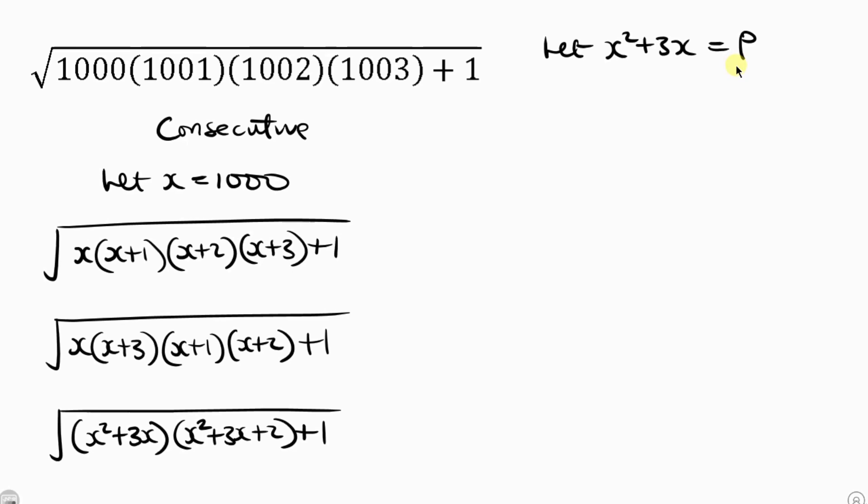That means wherever I see x squared plus 3x, I'm going to be putting p there. So my expression becomes the square root of p times p plus 2, and then plus 1. Now let's open up these brackets.